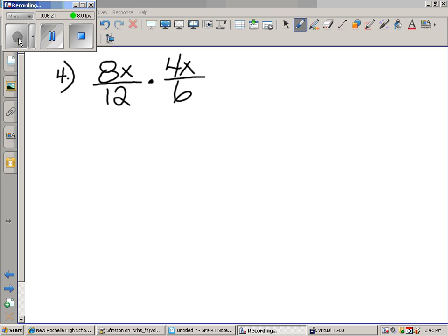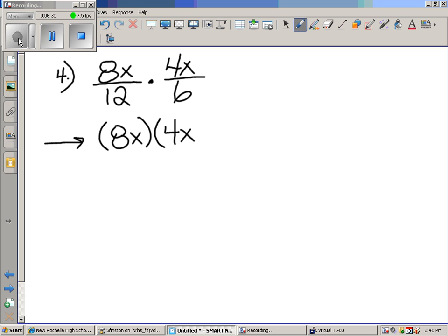Question number four. What do we do? What's step one? Bottom, bottom. Top, top. Yeah. Top, top, bottom, bottom. Because it's just multiplication. So that's 8X times. Hold on one second. 12 times 6. Top, top, bottom, bottom. So 8 times 4 is what?